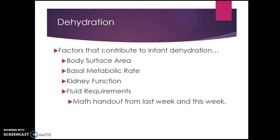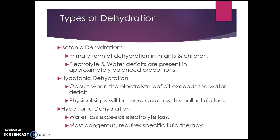Factors that contribute to dehydration: remember from the first week we talked about calculating minimum fluid requirements and minimum urine output — it's important to know how to calculate those. Isotonic dehydration is the primary form of dehydration in infants and children, meaning there are equal electrolyte and water deficits. This is caused by vomiting and diarrhea without completely replacing fluid loss.